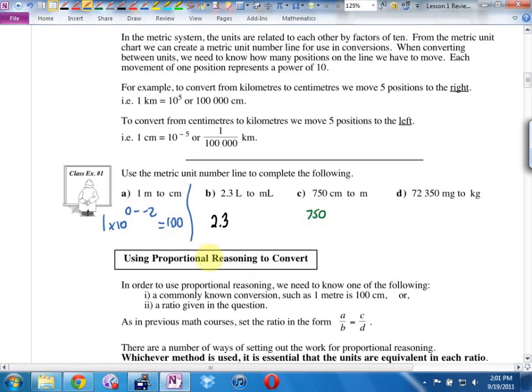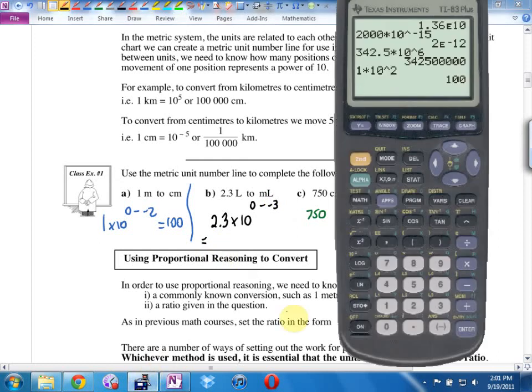Let's try B. 2.3 liters to milliliters. So what I would do is I would go times by 10 to the, what was the prefix for liters? Zero. Minus. What was milli? Negative 3. This is going to simplify to, this is our base units. Is there a prefix at all in front? So when there was no prefix, what did I put in that column? 10 to the what? That's where the 0 came from. It's going to be 2.3 times 10 to the power of, what is 0 minus minus 3? 2,300.